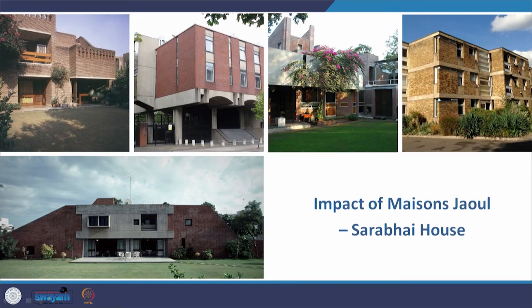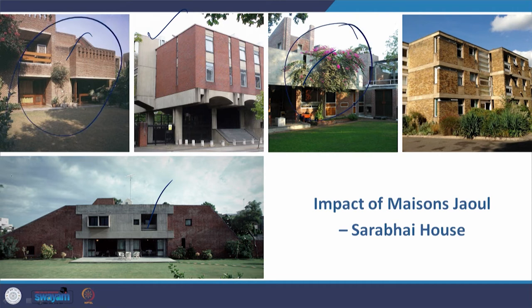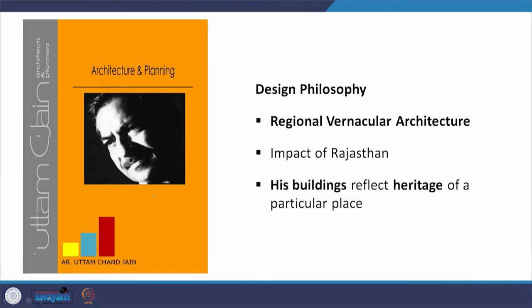The impact of Maison Jaoul was felt all over, and we can parallelly say the same of the Sarabhai house in India. These are three different houses — one by B.V. Doshi, one by Raj Rewal, and one by Charles Correa. Another architect who took hold of the idea of vernacular architecture in connection with modernism was U.C. Jain, working with a regional vernacular architecture.